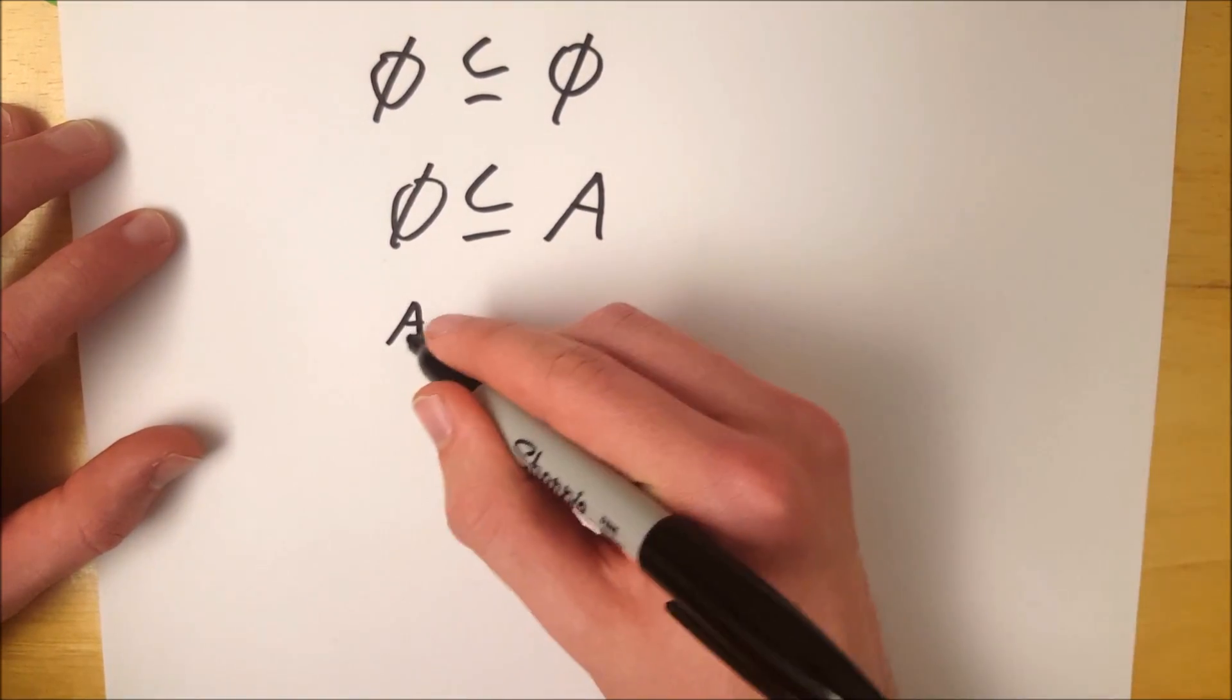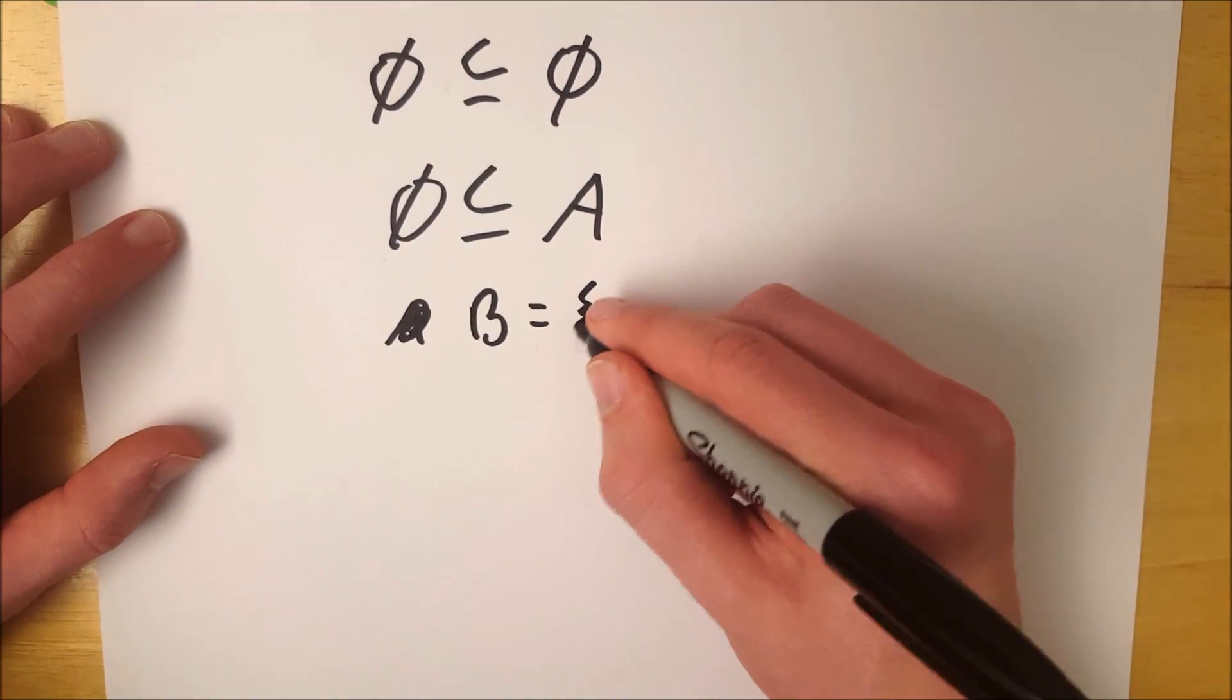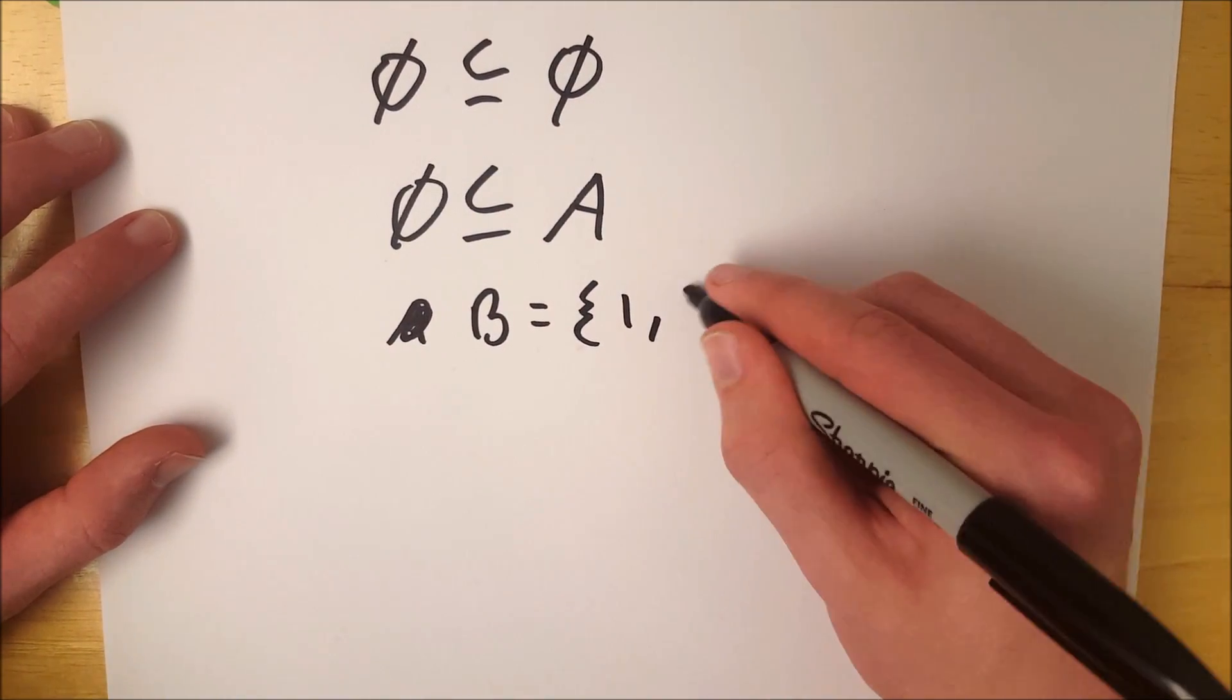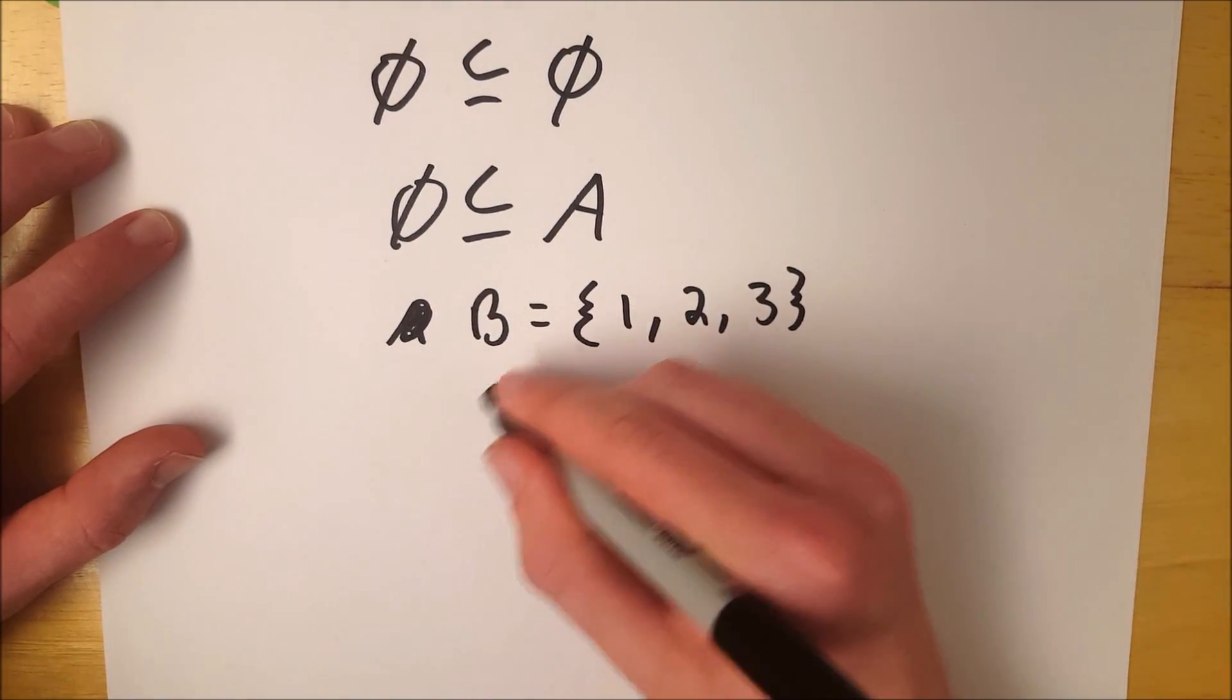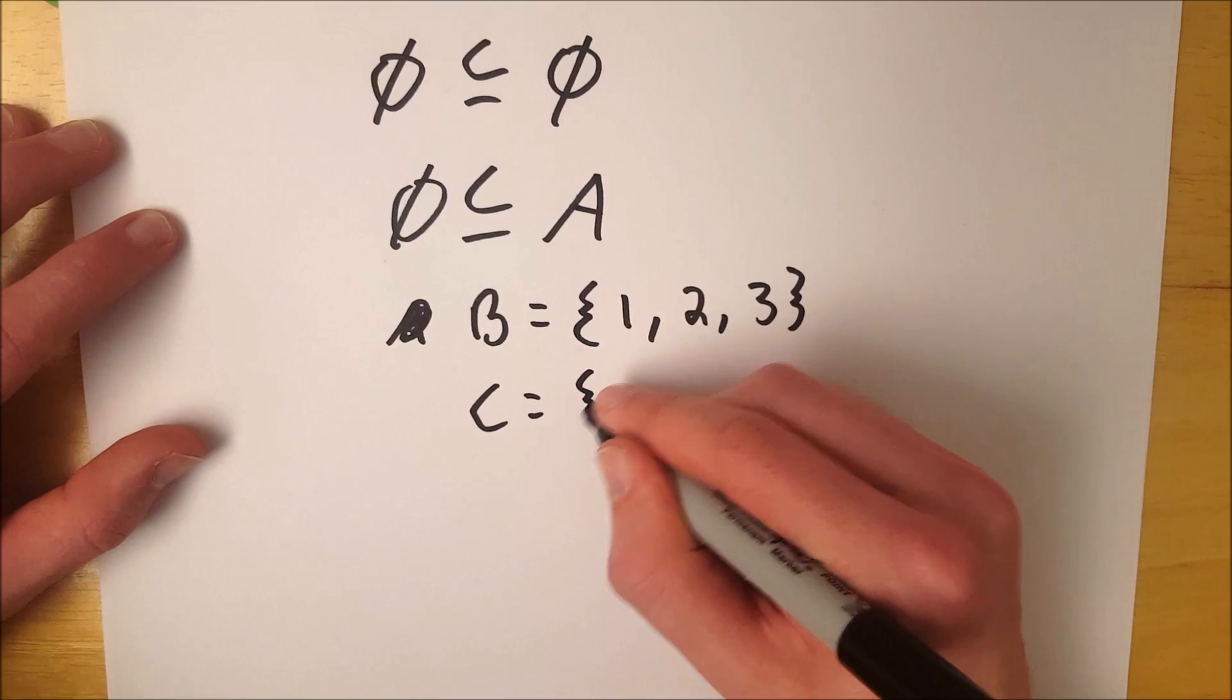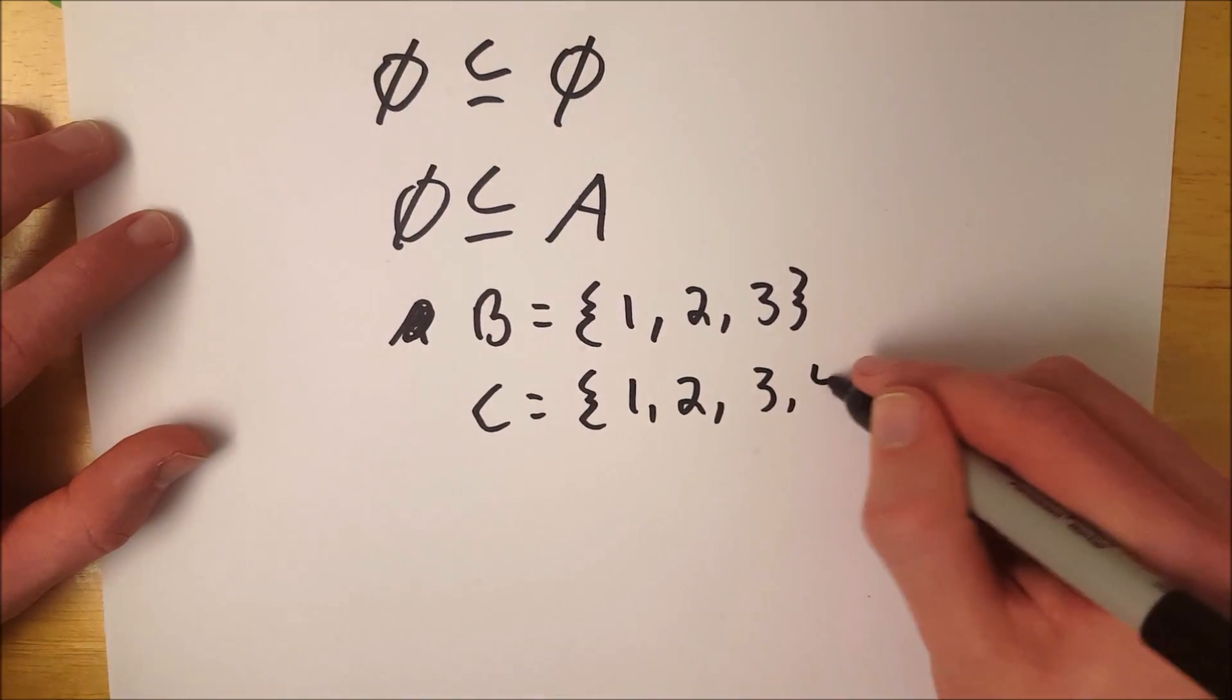So suppose we have set A. I already used A, let's just use B. Suppose we have B equal to the set containing 1, 2, 3, and then we have C which contains 1, 2, 3, and 4.